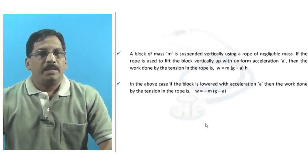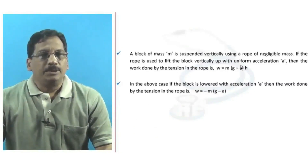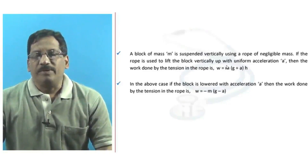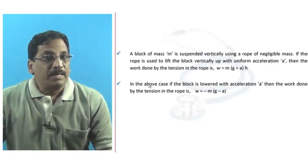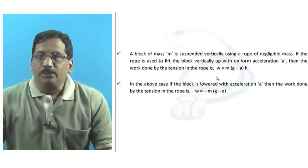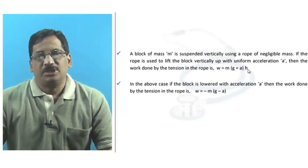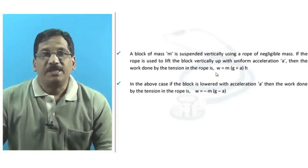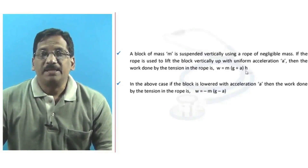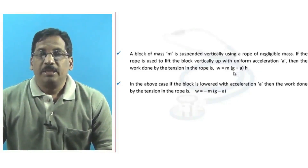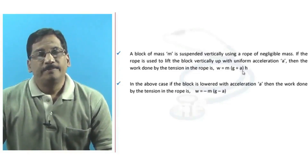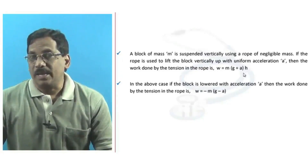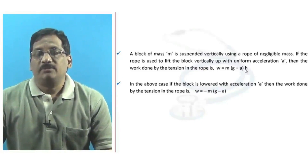A block of mass m is suspended vertically using a rope of negligible mass. If the rope is used to lift the block vertically upward with uniform acceleration a, the work done by the tension in the rope over height h is W = m(g + a) × h. The tension in the rope is mg + ma, and work done equals tension times displacement h.